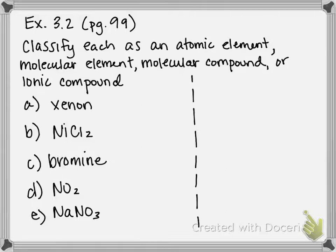So before we do that, let me do a quick review of how you determine whether it's an element, compound, atomic element, molecular element, molecular or ionic compound. So elements only contain one type of atom. Element, one atom type.